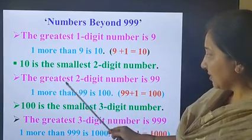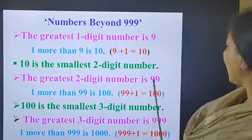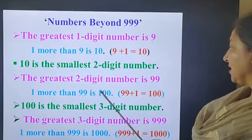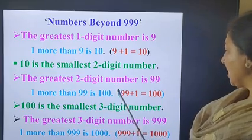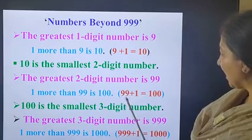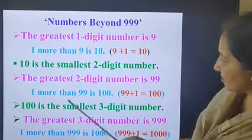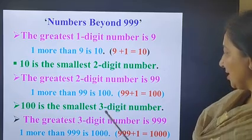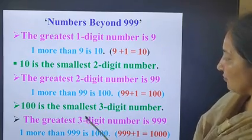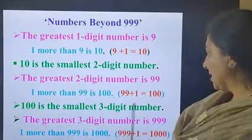The greatest 2-digit number is 99. 1 more than 99 is 100. When we add 1 to 99, we get number 100. 100 is the smallest 3-digit number, and we get the new place: 100's place.